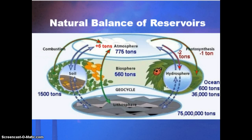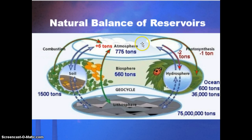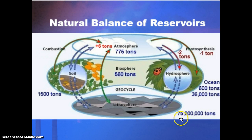When everything is going well, these reservoirs are in natural balance. Most of the carbon is trapped in the lithosphere — the crust of the Earth. There's a decent amount in the biosphere, but actually the lowest amount. The atmosphere is also one of the lower amounts, while the ocean holds quite a bit. This natural balance is really important, and the biggest problem is that we're upsetting it — taking carbon out of the lithosphere and adding it primarily to the atmosphere.